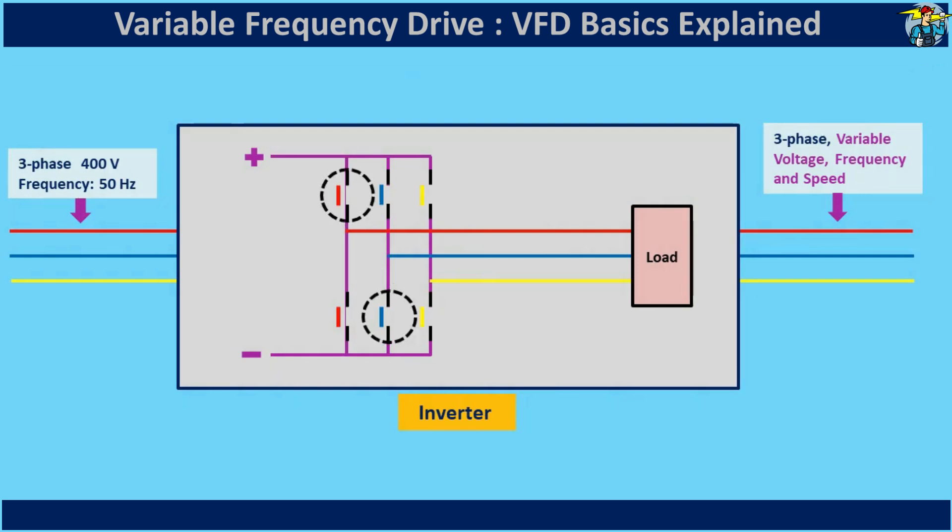When the pair of switches circled here is closed, the load receives DC voltage through the red and blue lines at that moment. When the pair of switches are changed, the load receives DC voltage from the blue and yellow lines accordingly.